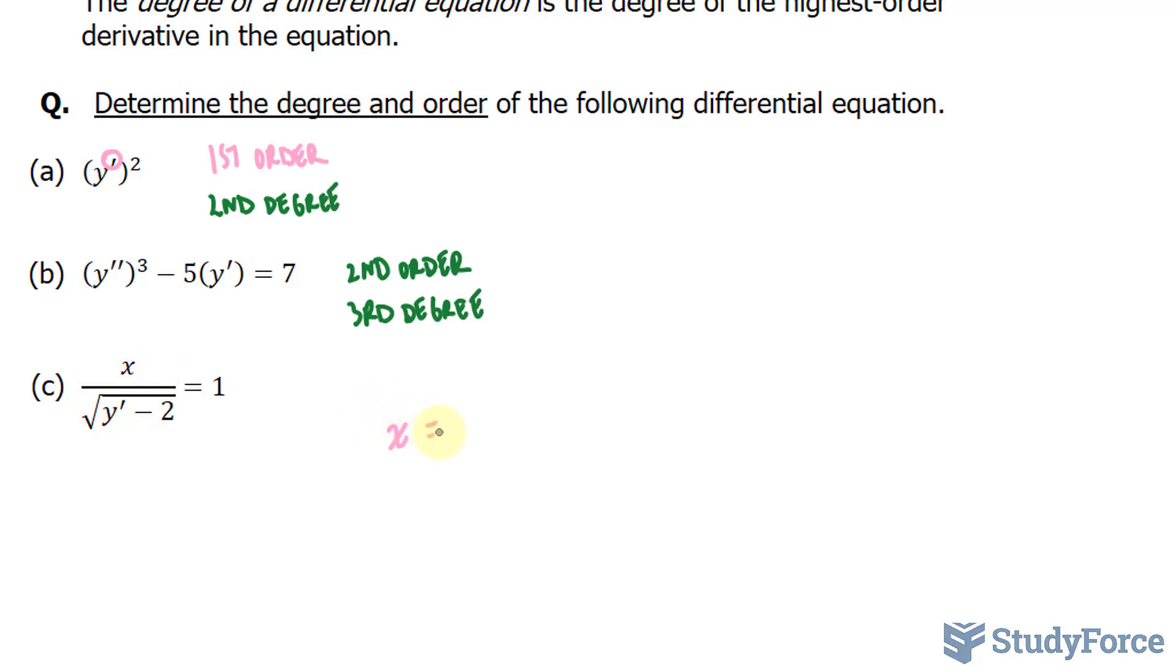Next, I'll clear the radical by squaring both sides. And if I do that, I end up with x squared is equal to y prime minus 2.